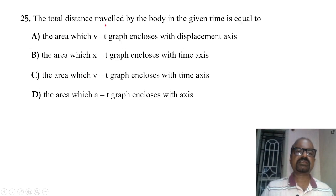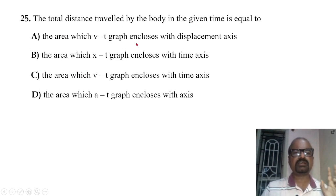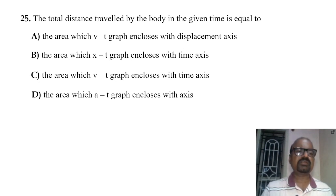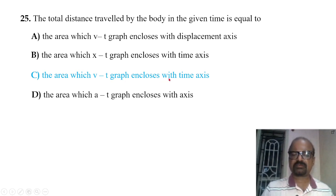The total distance travelled by the body in a given time is equal to the area enclosed by the velocity-time graph and the time axis.